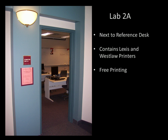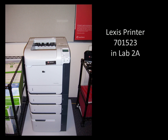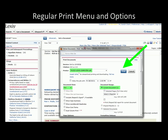If you want to print for free, you need to print to the Lexis printer which is located in Lab 2A next to the reference desk. This is what the Lexis printer looks like. You can also get to the Lexis printer through the regular print button next to the fast print button. It also defaults to the Lexis Computer Lab.